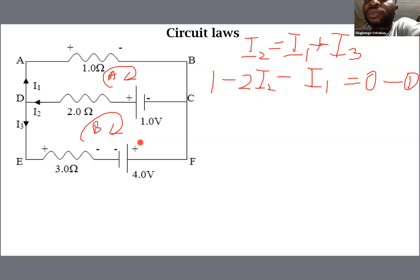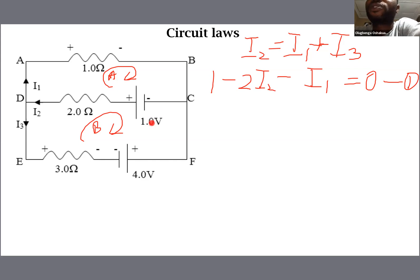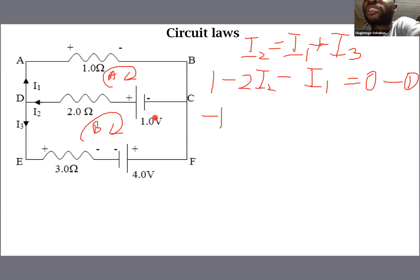So let's go to Loop B. In Loop B, we have two batteries and two resistors. Let's start from the 1-volt battery. We expect current to flow to the left out of this battery, but our loop is in a clockwise manner, which means it contradicts the way current will flow out of this 1-volt battery. For that reason, we say minus 1. We've left the battery because the direction of travel contradicts how current should flow out — direction of travel goes from positive into negative, whereas current is expected to flow from positive to negative within the battery going outward.